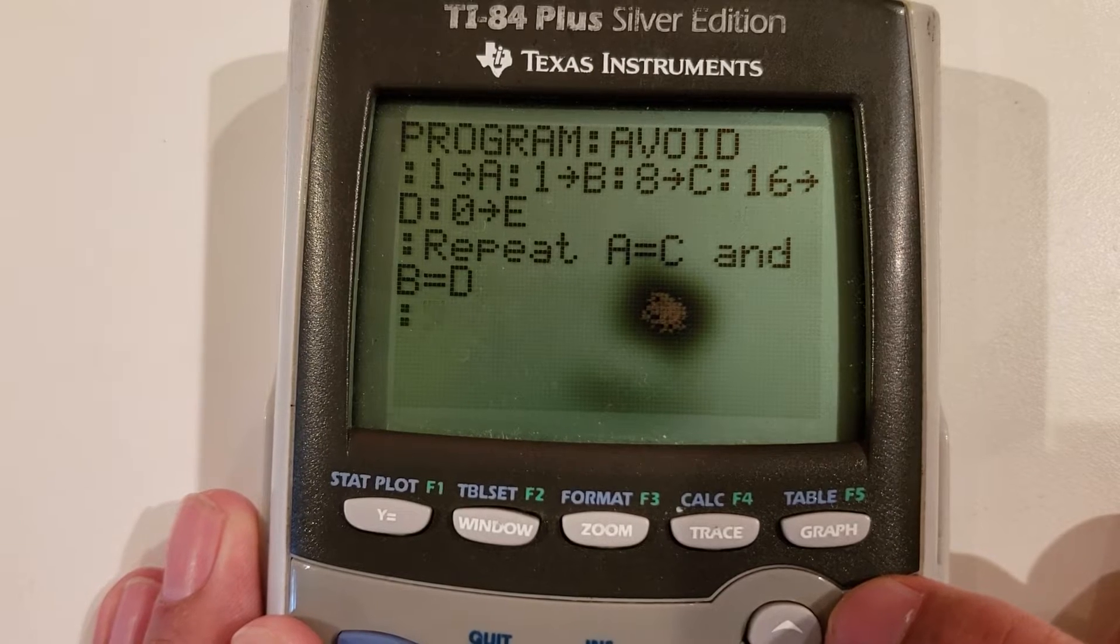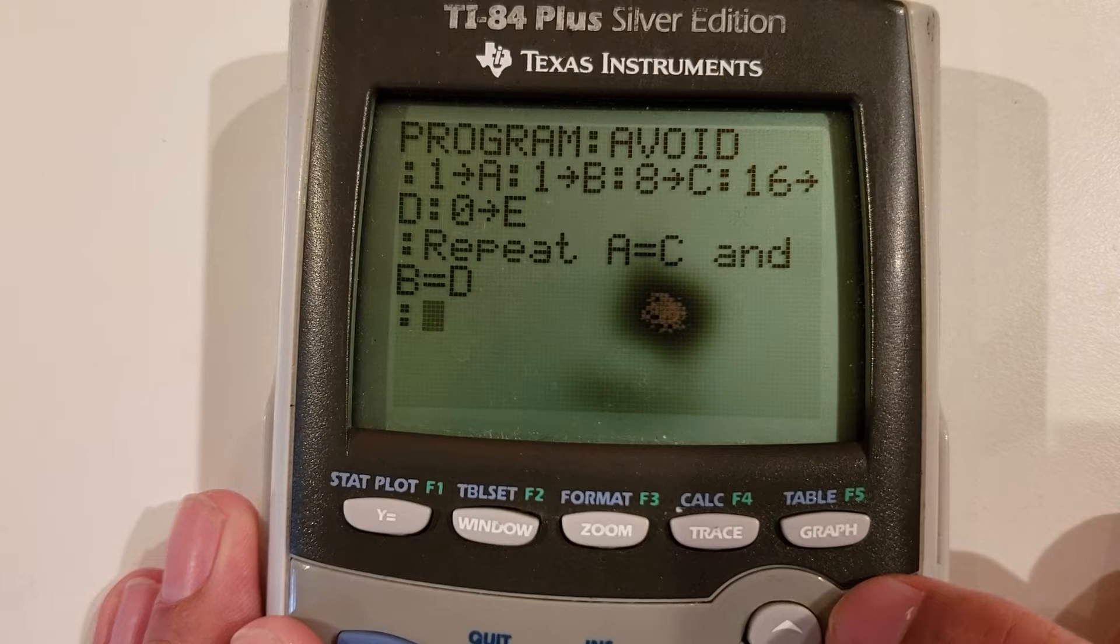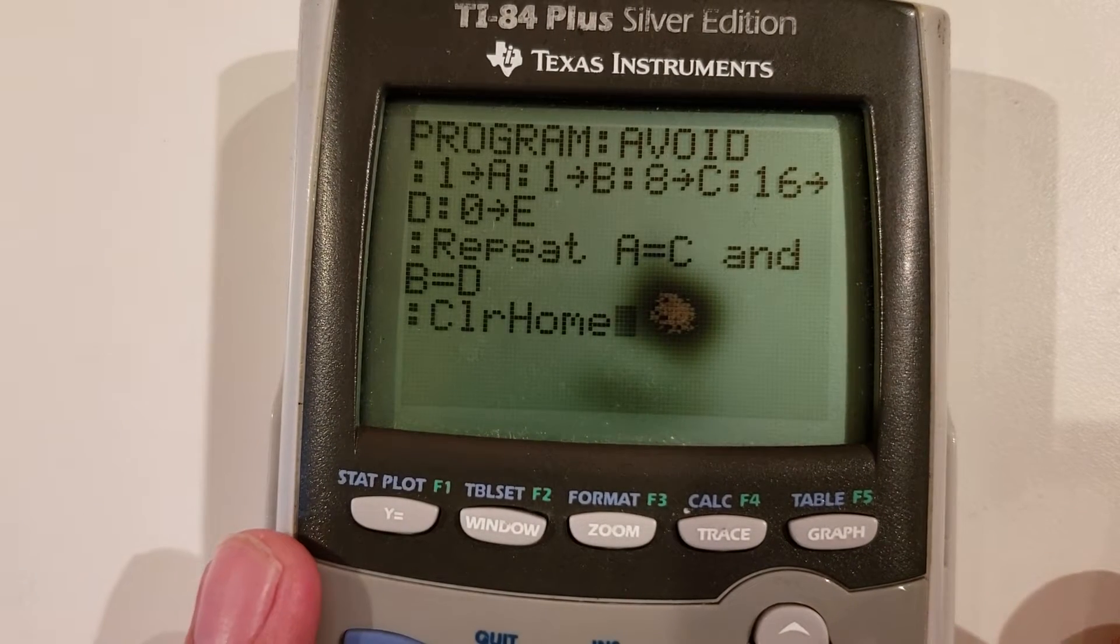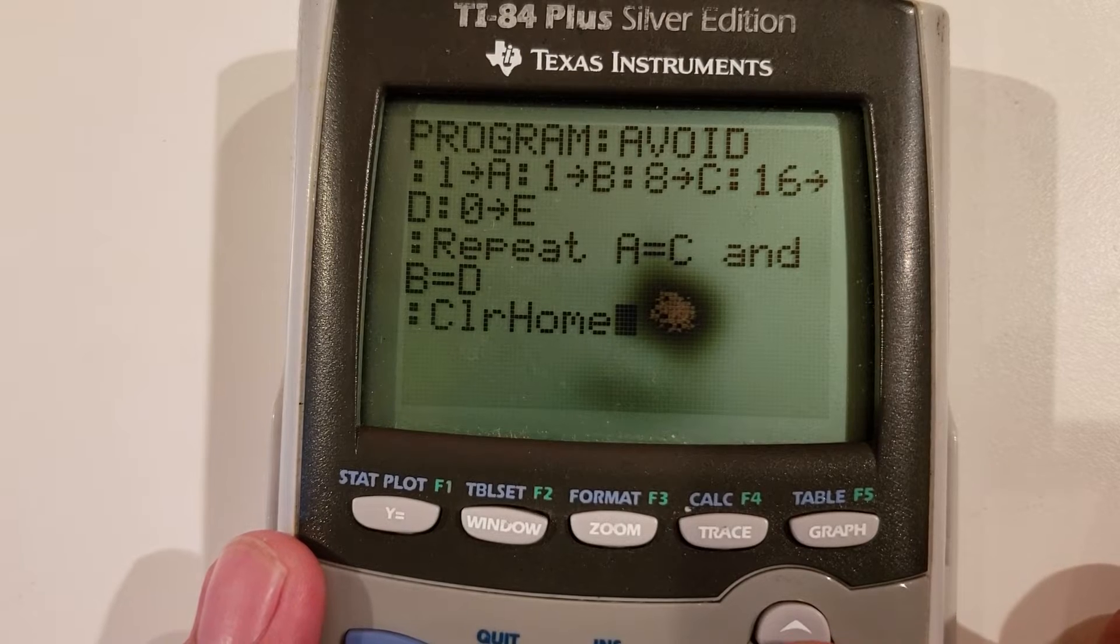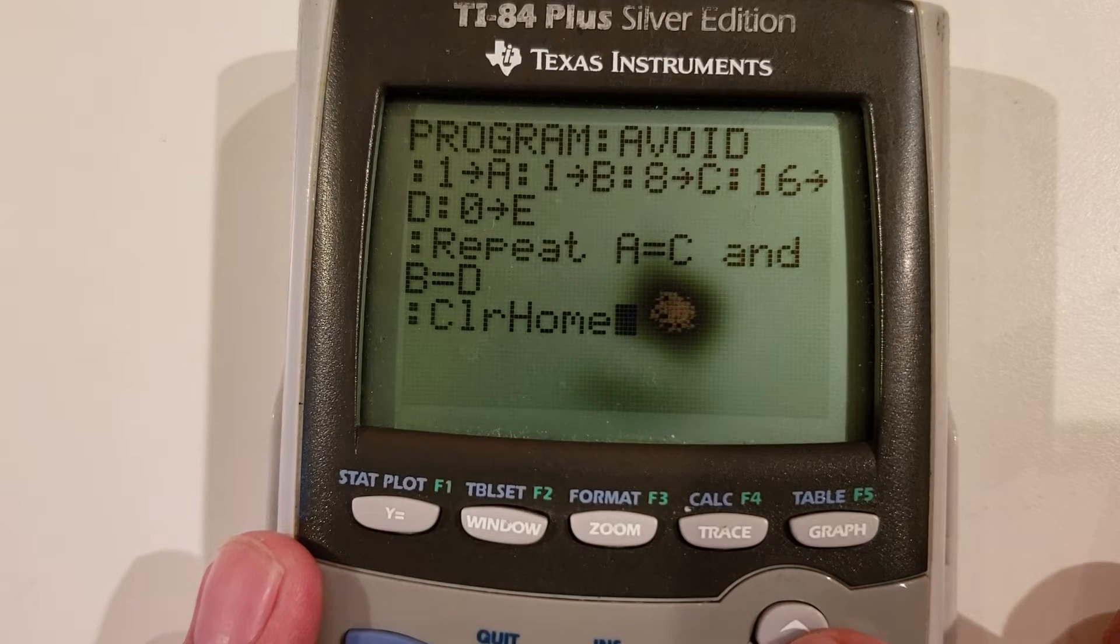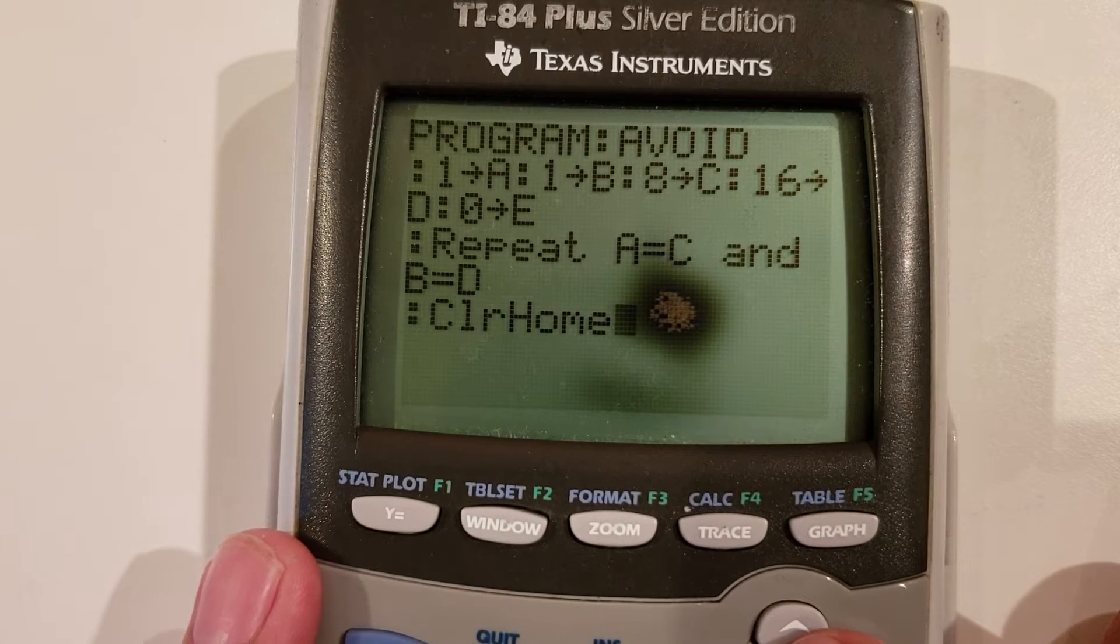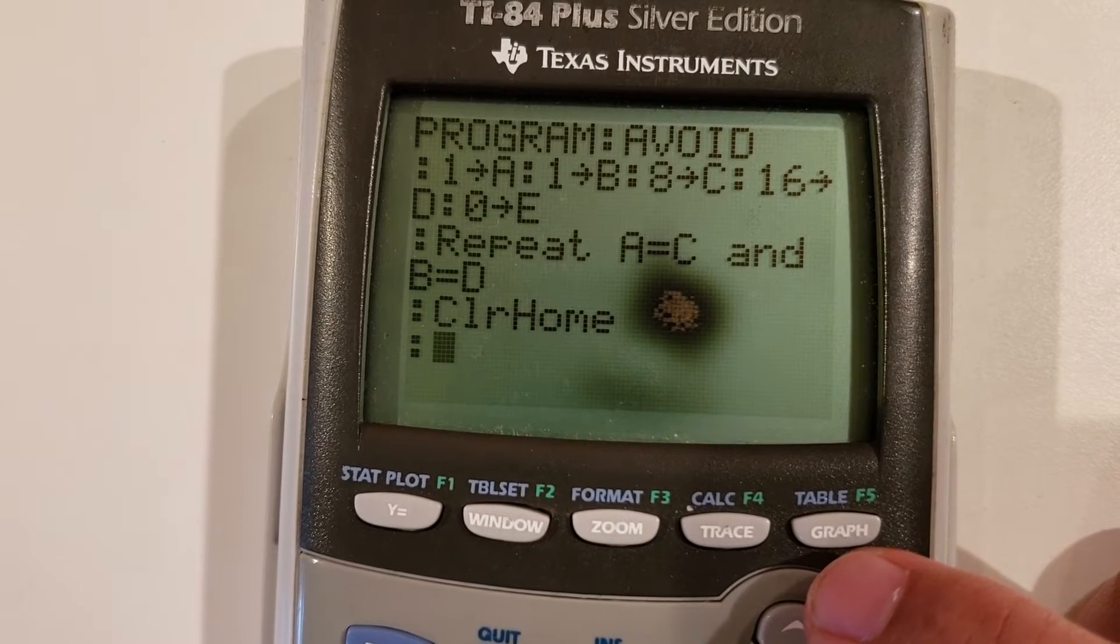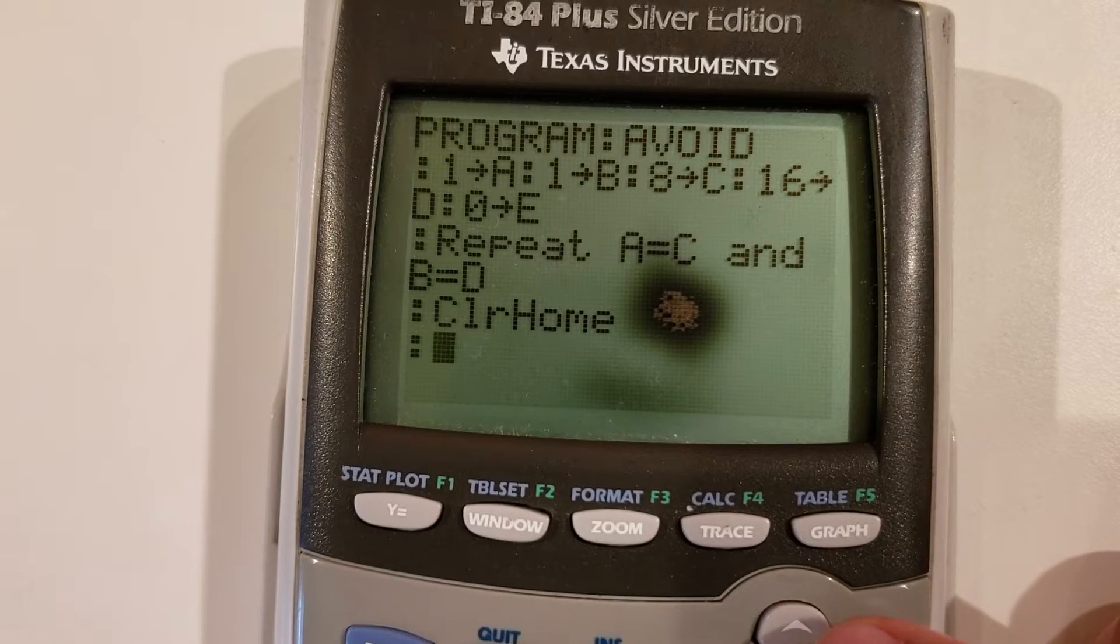With the loop started, all of the following code will be included in the loop, starting with a clear home command. I'm using some keyboard shortcuts to get there. This command clears the display. Clear home is the quickest and most cost effective in terms of time and memory.